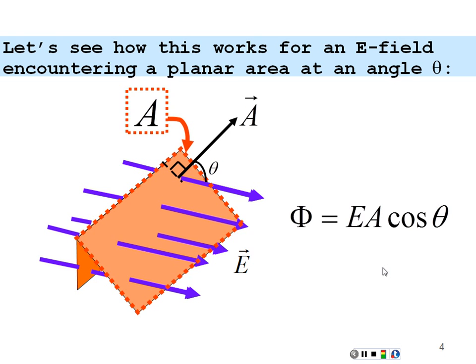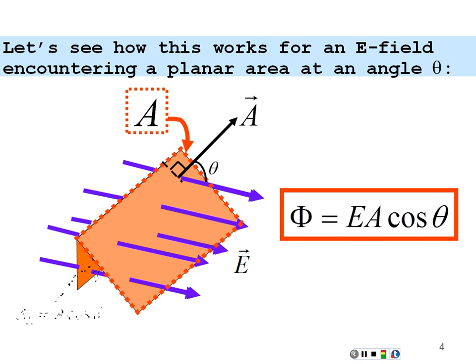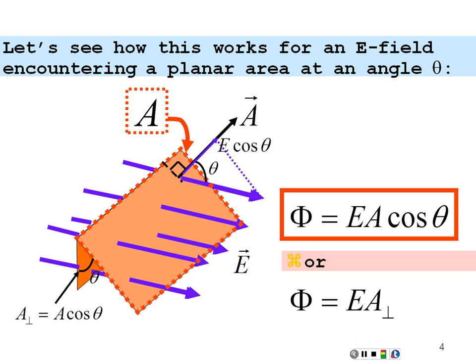I can describe the flux through this larger angled area as being equal to the magnitude of the field times the magnitude of that area times the cosine of the angle between the field direction and the area vector. This is the same as the flux going through the perpendicular area, because looking at the right triangle formed, the area of the hypotenuse corresponds to the other side by A cosine theta. So flux equals E times A cosine theta whether or not there's an angle between them — and that is the dot product. Keep in mind: flux is how many field lines are going through an area.